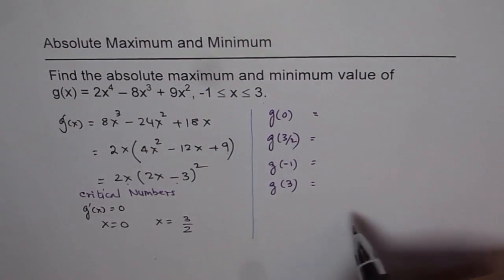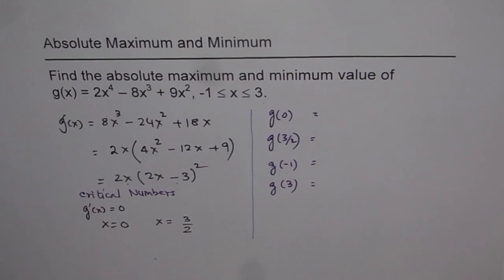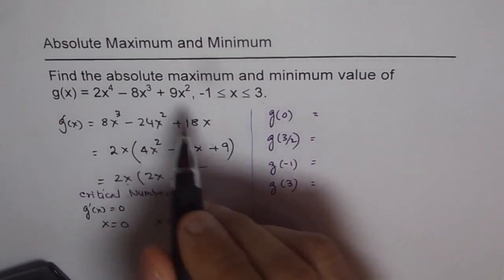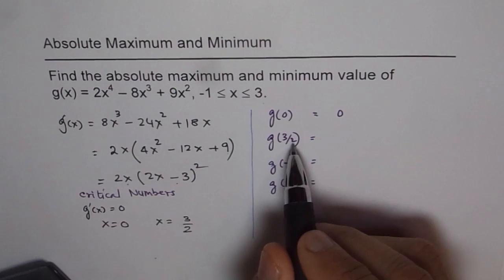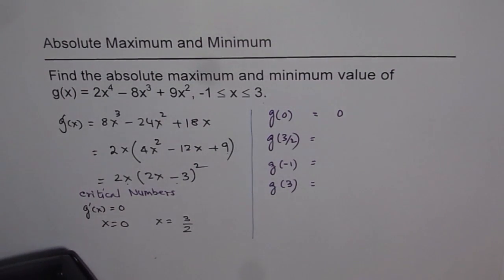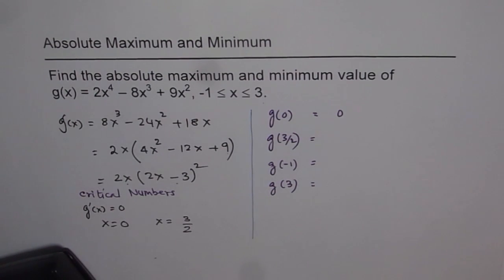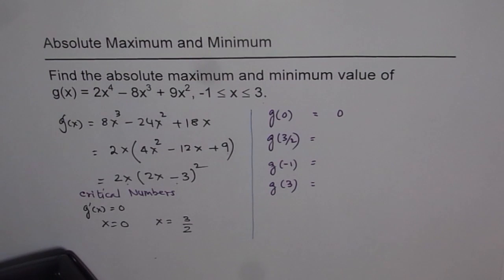Once you find these values, compare which is the maximum and which is the minimum. If I plug in 0 into the function, I get 0. For x = 3/2, that is 1.5: 2(1.5)⁴ - 8(1.5)³ + 9(1.5)² equals 3.375.